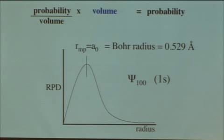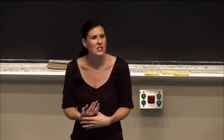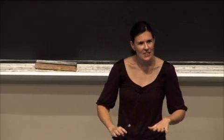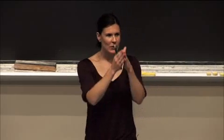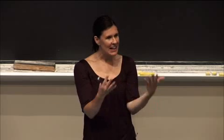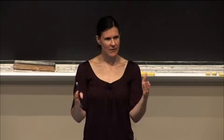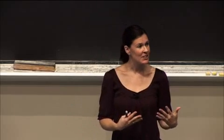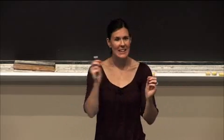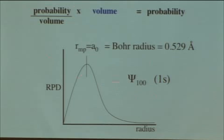We talked about the Bohr model and how that told us an exact distance — it was a classical model, so we could say the electron is exactly this far away from the nucleus. We cannot do that with quantum mechanics. The best we can get is the probability of finding the electron at any given distance. The most probable one for the 1s hydrogen atom is at a₀.